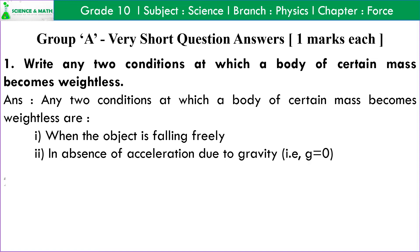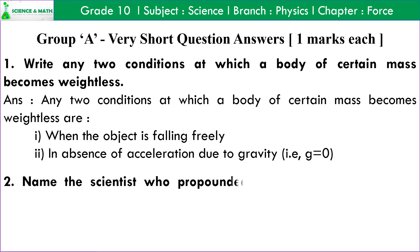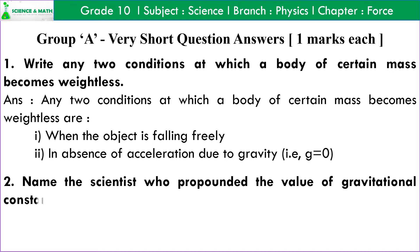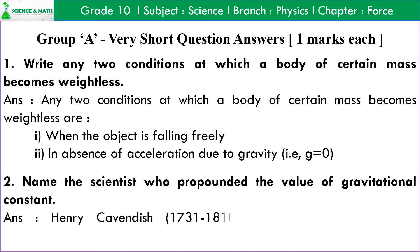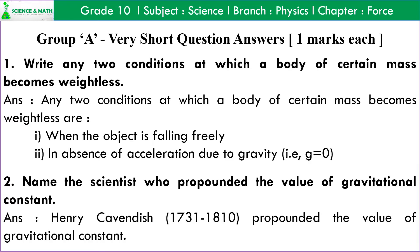Q2: Name the scientist who propounded the value of gravitational constant. Answer: Henry Cavendish (1741 to 1810) propounded the value of gravitational constant.